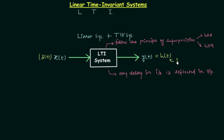The output of the system for delta(t) as input is known as the impulse response h(t). The impulse response is used to define the LTI system and is a very important parameter. It is in the time domain.